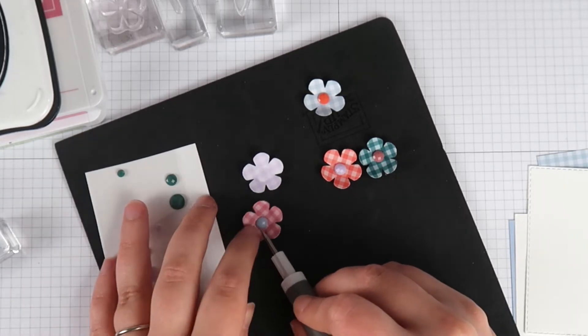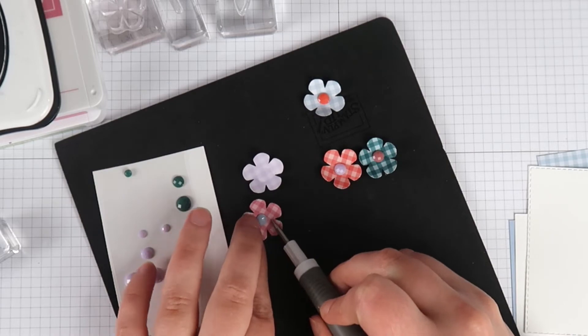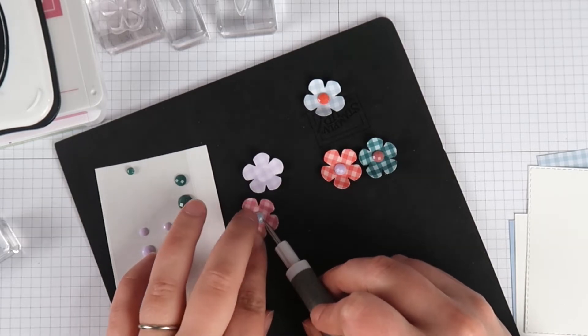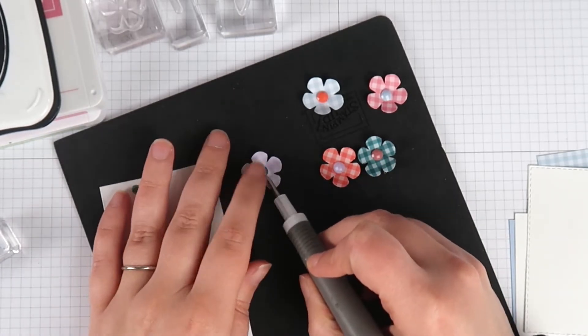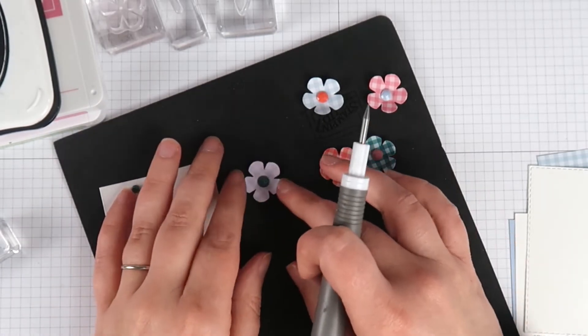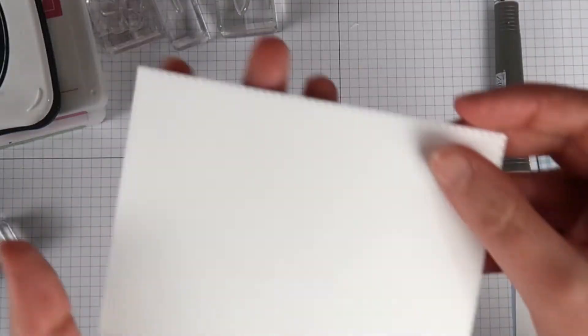You can also use for this gemstones, rhinestones, you can use white pearl accents and color them with alcohol markers to make them any color, you can use sequins. You can really kind of go creative there.